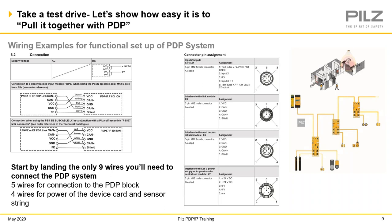This is the only technical slide I'm going to show today — we'll cover it just very briefly. Most importantly, that bottom left corner shows that you're landing only nine wires for your PDP system: five wires are your connection to the block, and four wires are for power of the device part and the sensor strength. For anything in more detail, your sales engineer would be happy to review it with you. This information is here for reference if anyone wants to rewatch this on the YouTube channel afterwards.